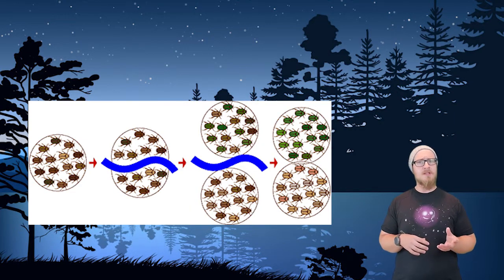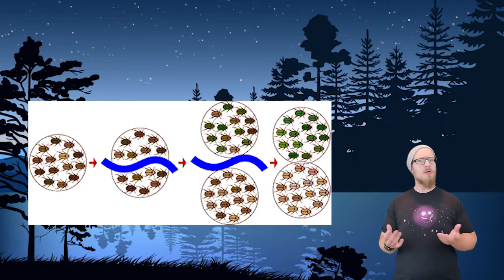The two populations eventually become so different genetically that they can no longer reproduce with each other. When individuals from two populations that have been separated can no longer produce offspring, it is said that the two groups are a different species. While this process generally happens slowly over thousands and millions of years, there are some examples of rapid speciation events.